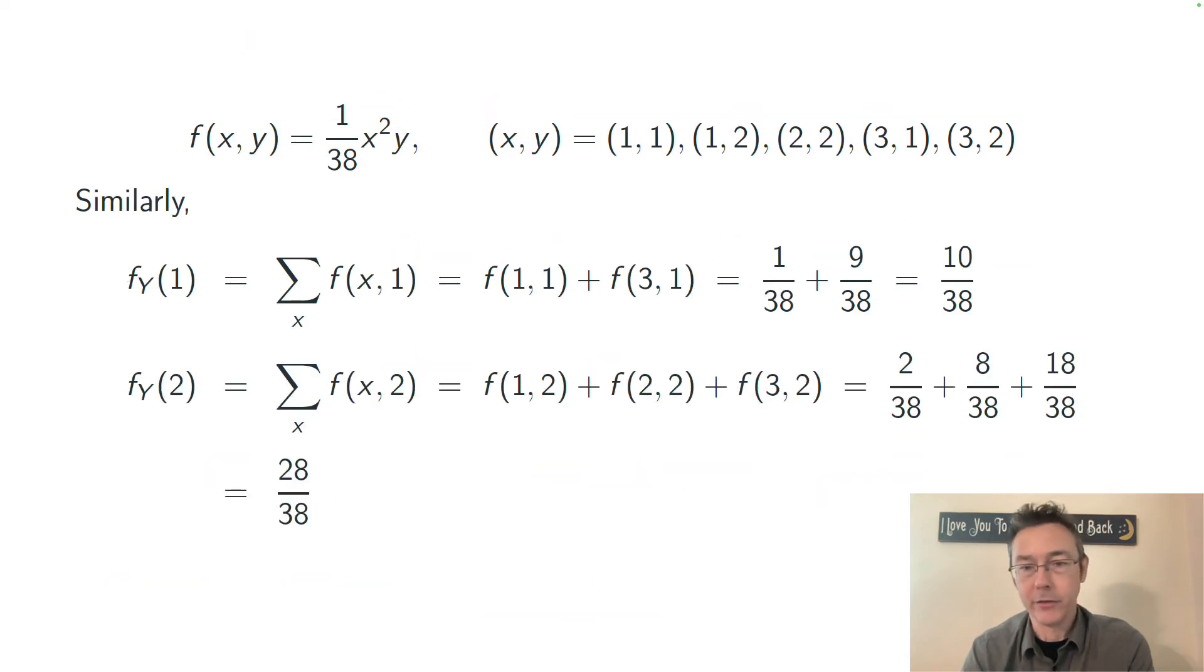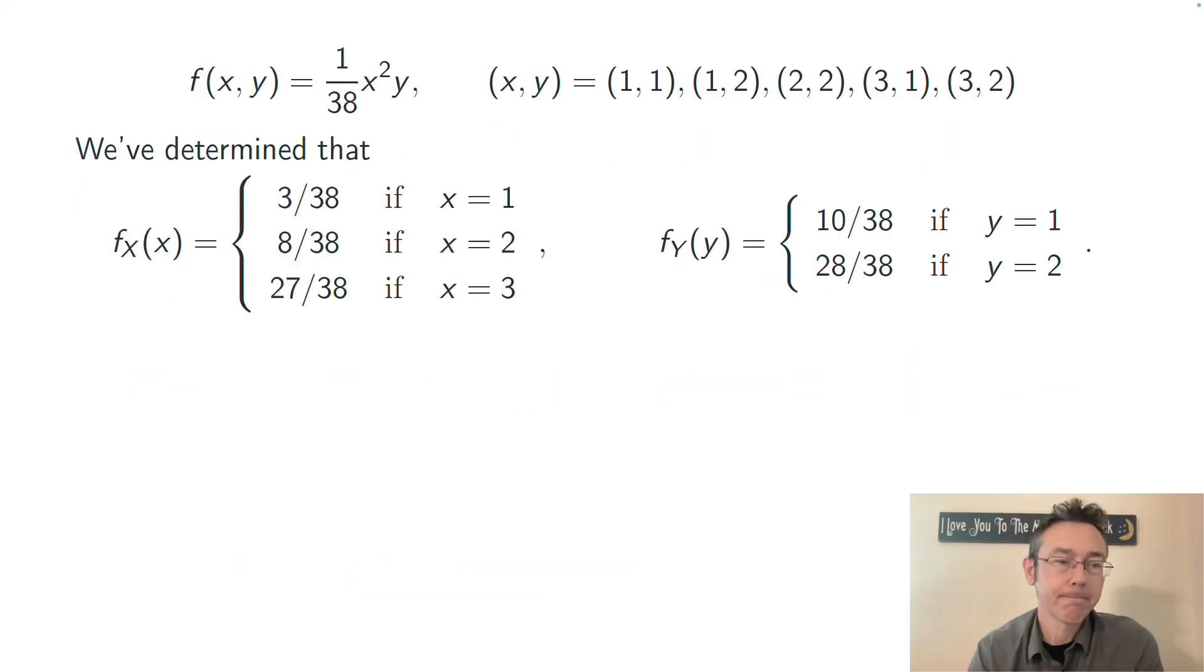Similarly for Y, and I'll just flash this at you, there's only two possibilities for Y. Y can be 1 and Y can be 2. There's no possibility that y equals 3 here. We get f_Y(1) is 10/38, and f_Y(2) is 28/38. Again, these add up to 1. I haven't bothered to reduce my fractions here. So here are the two marginal probability mass functions written down all at once.